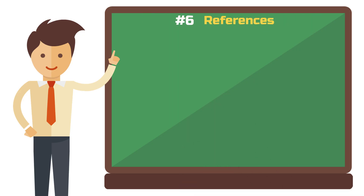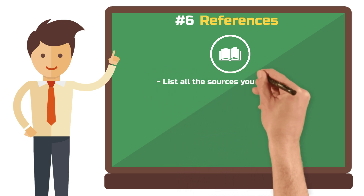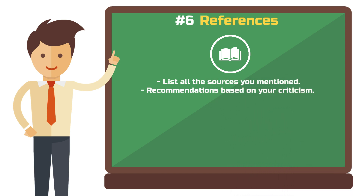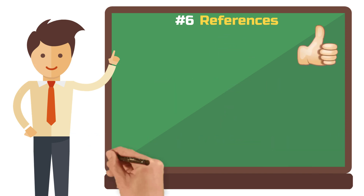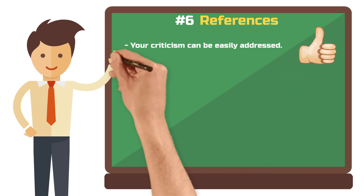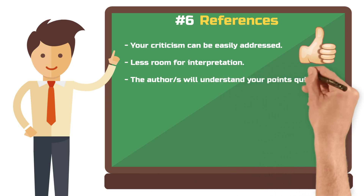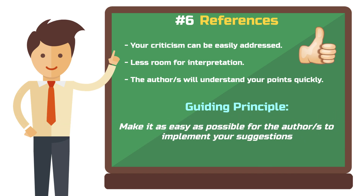Step 6: References. A truly professional review includes a short reference list. Here you list all sources you cited to support your critique or recommend to the authors. This small but significant detail elevates a mediocre review to a very good one. It makes it as easy as possible for the authors to address your critique — they can read the references you cited and tackle the points you raised. This can be a general guideline when writing reviews: make it as easy as possible for the authors to implement your suggestions. Whoever reviews your review will be impressed.